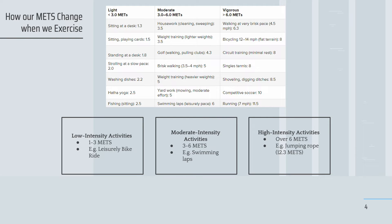Moderate intensity MET activities involve 3–6 METs, and these include things like swimming laps, doing housework, and weight training. High intensity, or more vigorous activities, have over 6 METs and involve running, jumping rope, playing competitive sports, etc. It's important to note that how intensely you perform the activity will impact your MET score, so one activity can have different scores depending on how vigorously you perform it. You can also refer to the table for other activities.